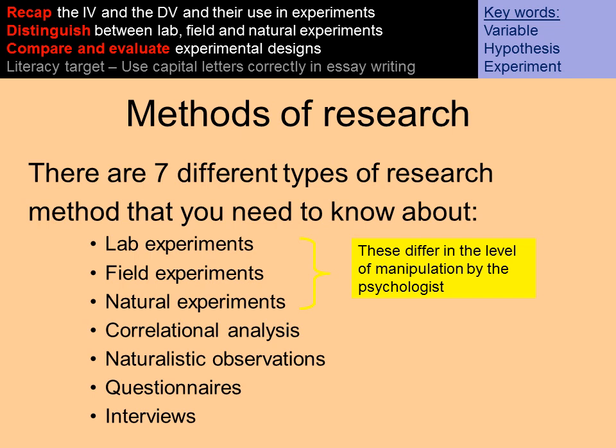In this video we're going to look at some of the methods of research within the cognitive approach. There are seven different types of research that you need to know about by the end of the course.